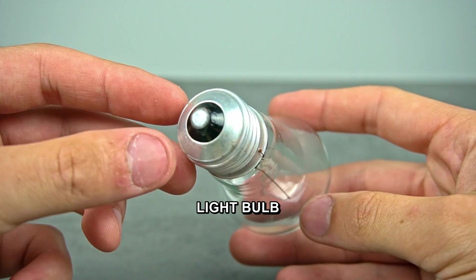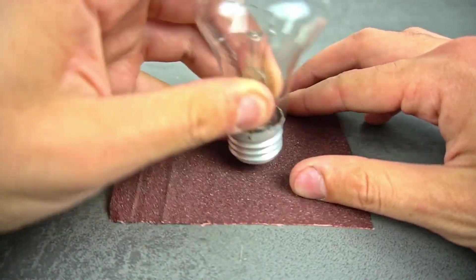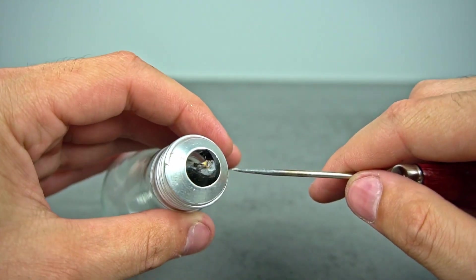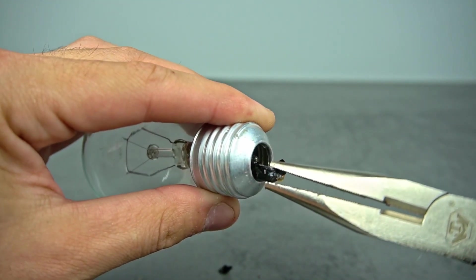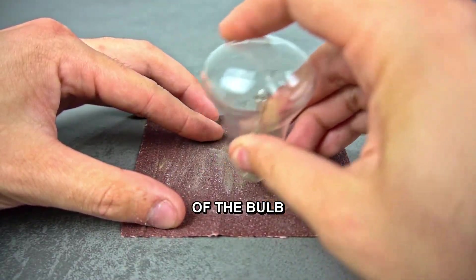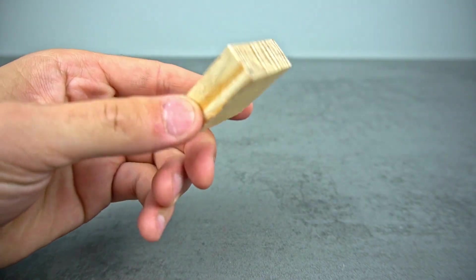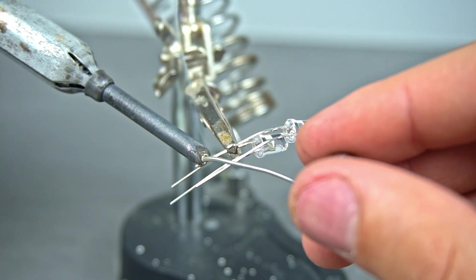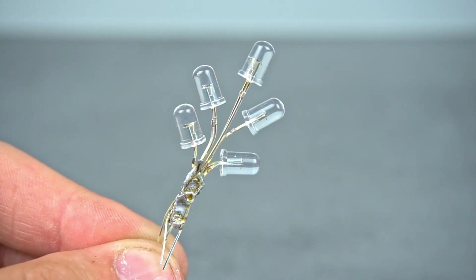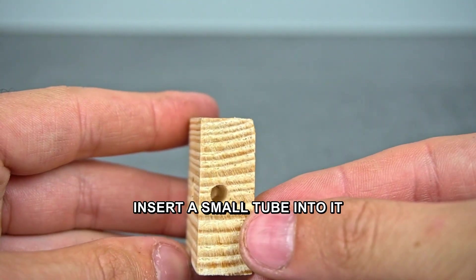Take a regular incandescent light bulb with a large base and remove the internal parts, leaving only the glass bulb. Also remove the contents of the bulb. Prepare a small wooden block. Solder LEDs together in the shape of a decorative tree. Make a hole in the wood and insert a small tube into it.